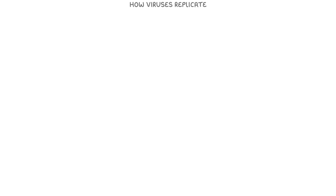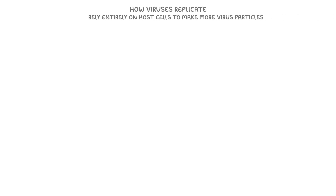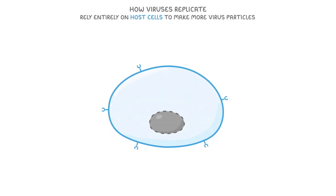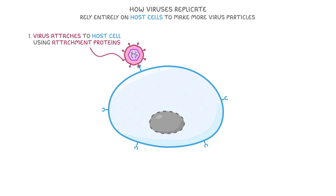Finally, let's cover how viruses replicate. Unlike cells, viruses don't go through cell division — instead they rely entirely on host cells to make more virus particles. The replication process begins when a virus attaches itself to a host cell using its attachment proteins.